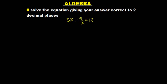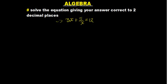We look at another algebra equation. This one is asking us to solve the equation giving our answer correct to two decimal places. This is a quadratic, and keep in mind the form is supposed to be Ax squared plus Bx plus C. That is how it's supposed to be, so it's up to us to put it in the correct order so that it will be very simple for us to work with.